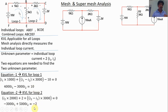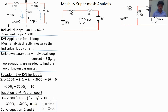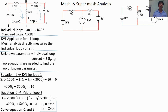By solving equations 1 and 2 simultaneously, we get I1 = 4 milliampere and I2 = 2 milliampere. This completes the mesh analysis for Type 1. Our objective was to find the individual loop currents.